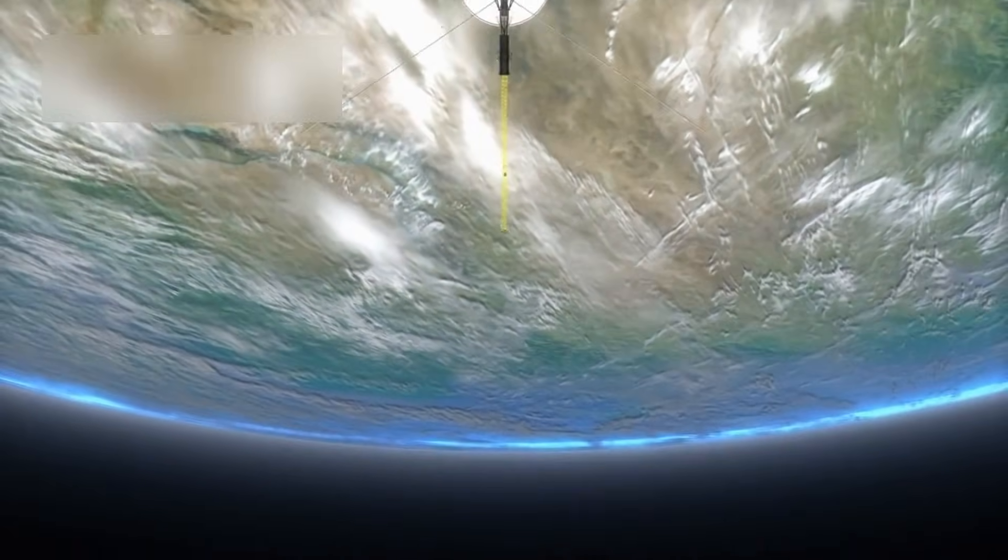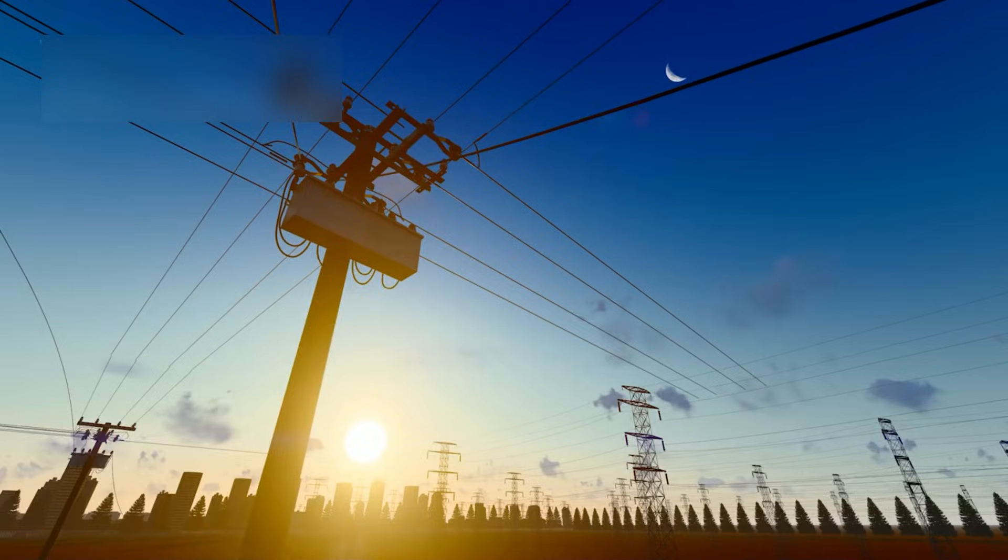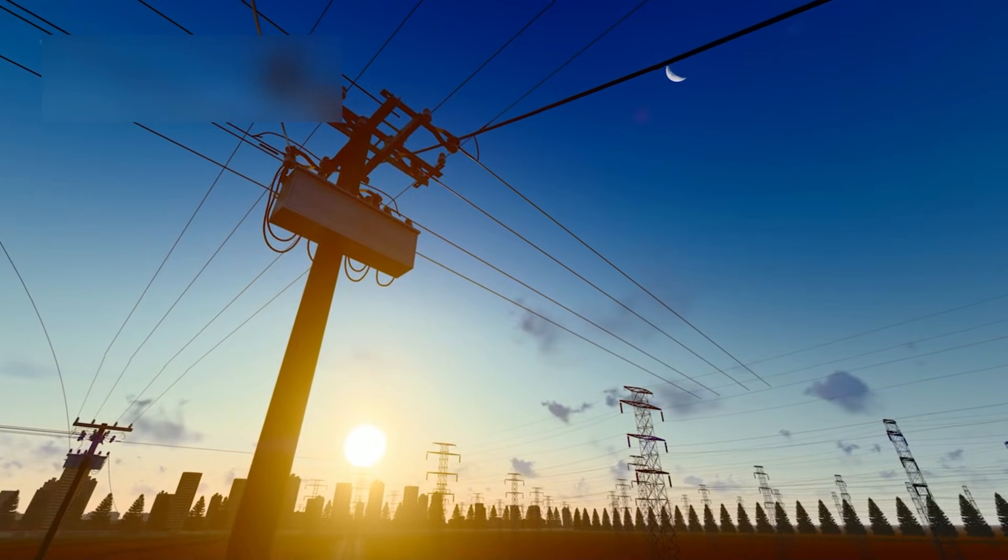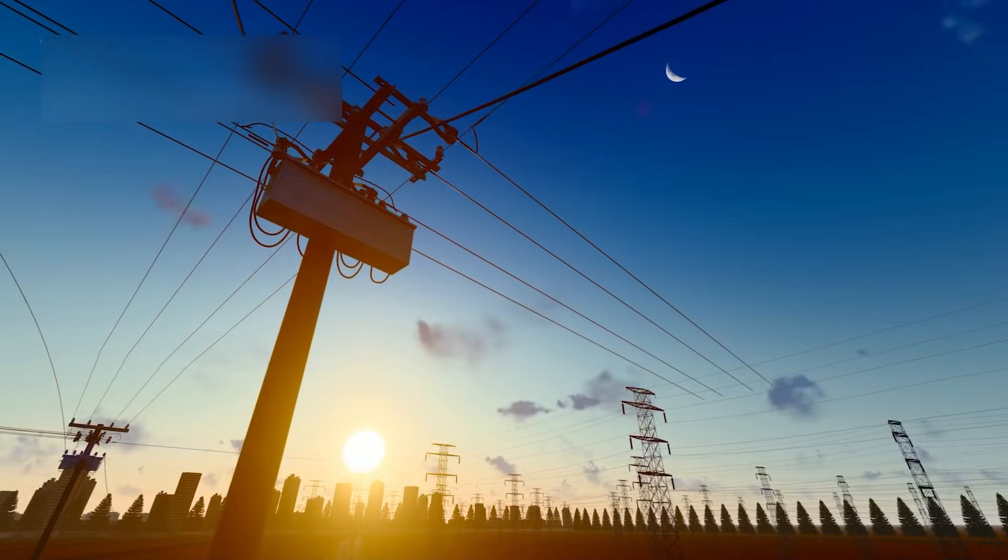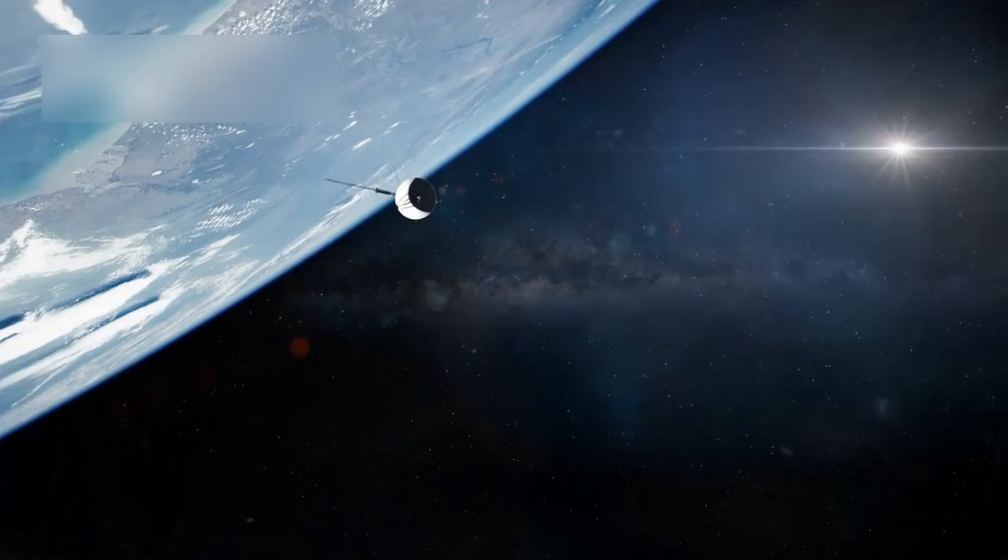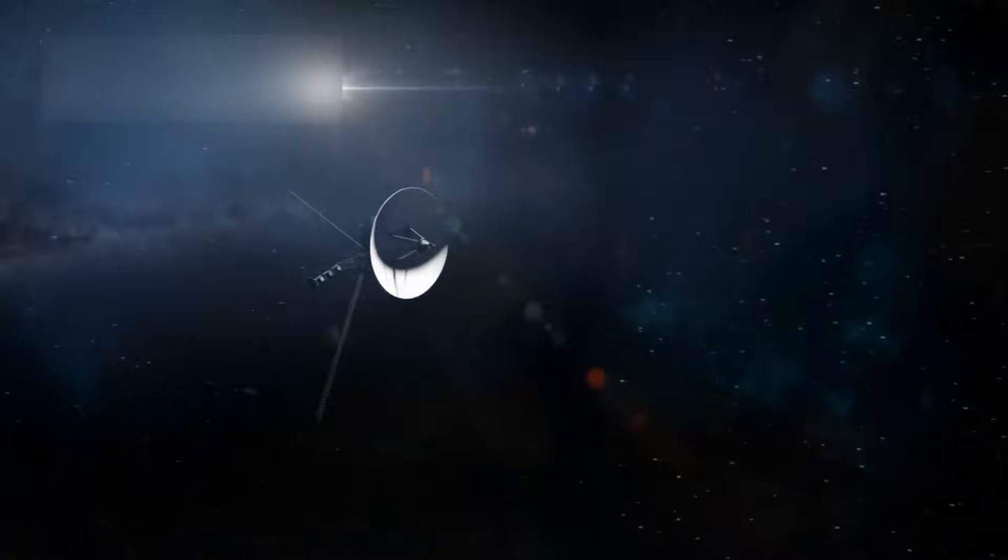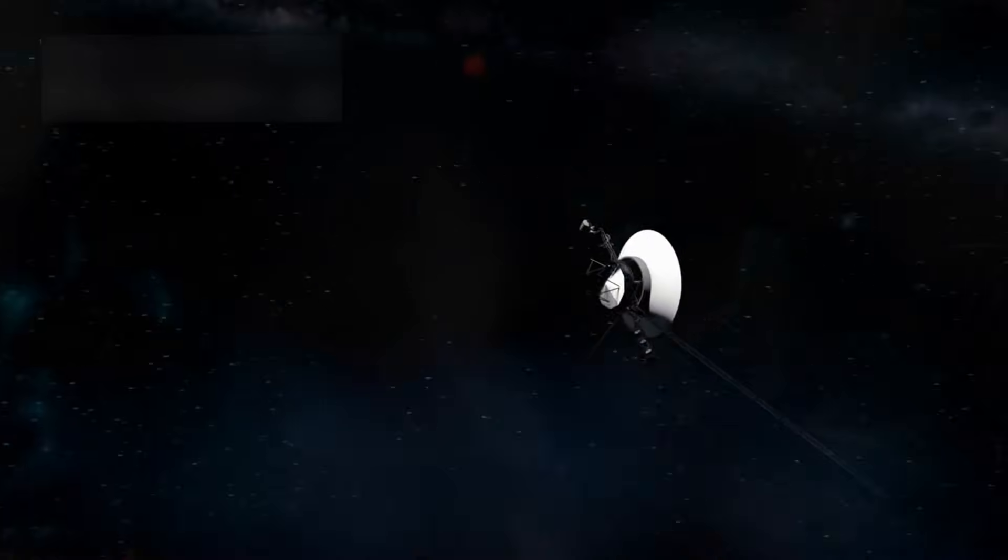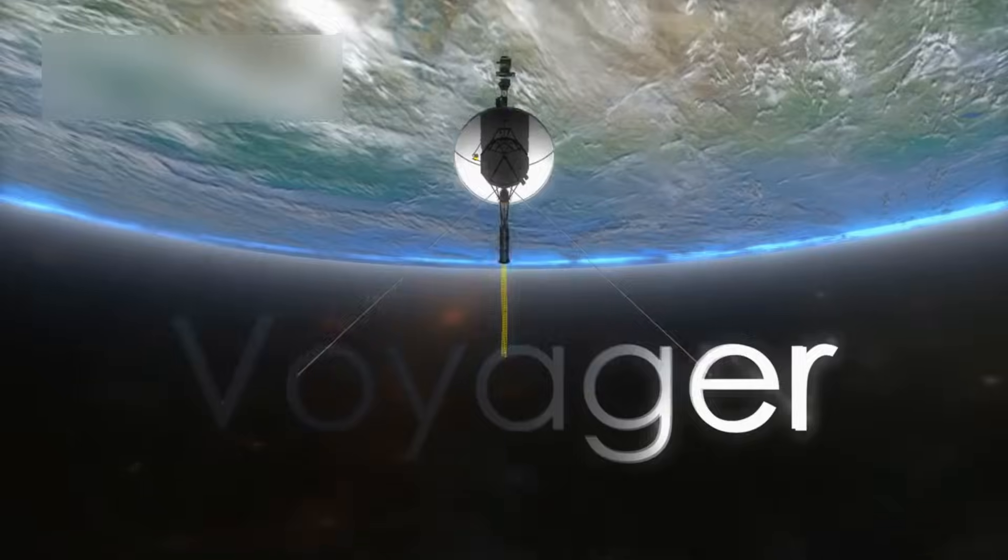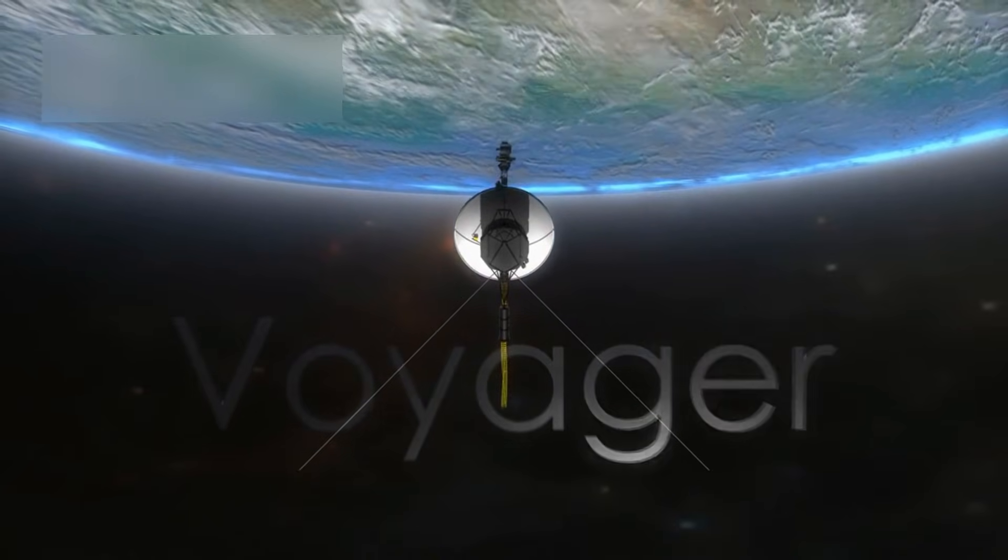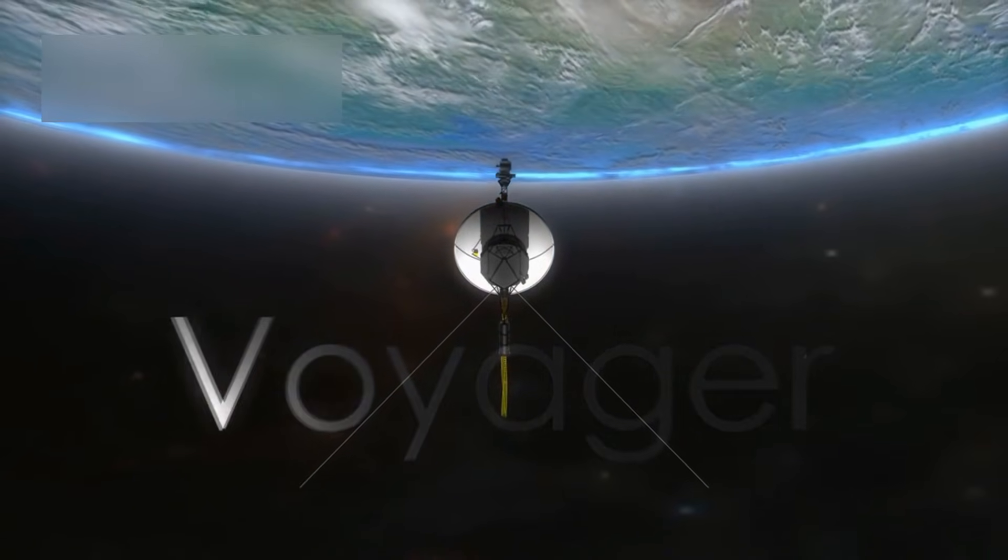The spacecraft continues to face serious challenges. Communication with Earth takes about 19 hours one way, and its power supply is dwindling. To save energy, NASA has had to shut down non-essential systems, leaving only the most critical instruments running. Still, Voyager 1 keeps transmitting valuable data, proving how well it was built.